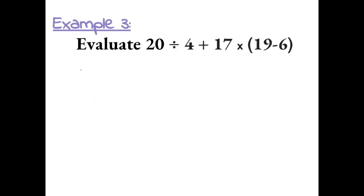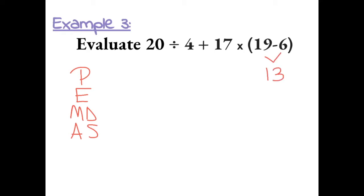Example 3: To evaluate, we always need to use order of operations. First, we need to do what's inside the parentheses. 19 minus 6 gives us 13. Now we can bring everything else down: 20 divided by 4 plus 17 times 13.